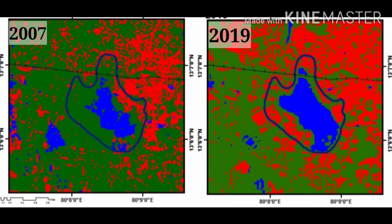In 2007, the encroachment was at its peak and many buildings were constructed inside the boundary. We can see the buildings on the eastern side of the map. The red color indicates buildings.